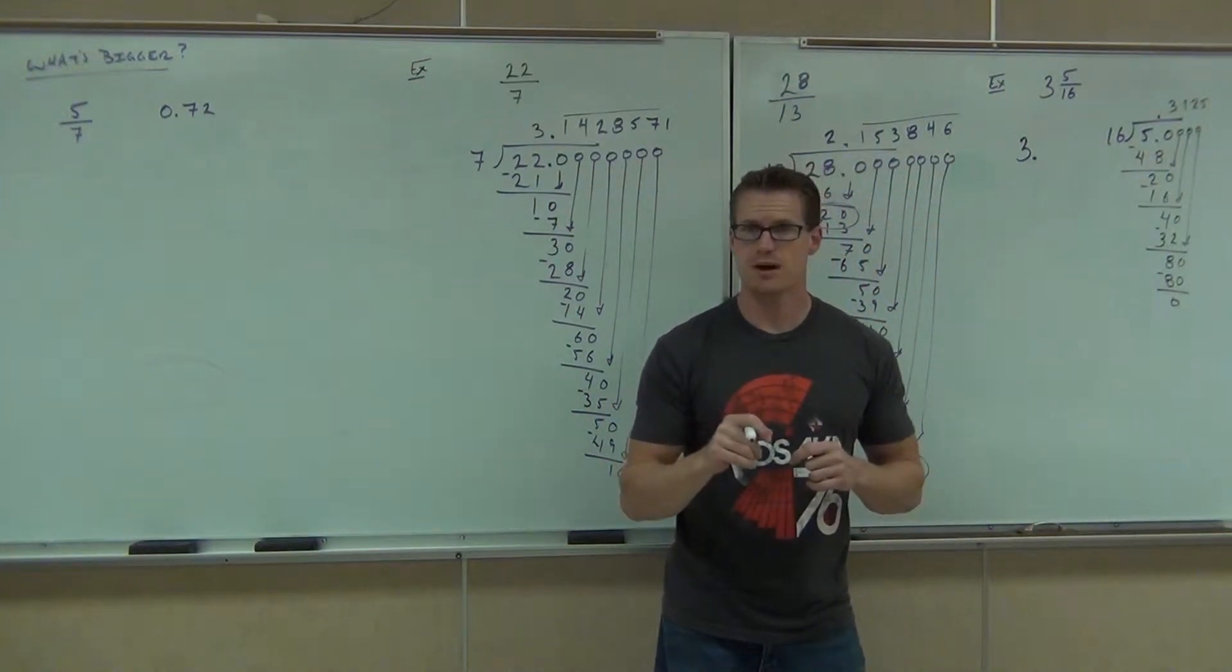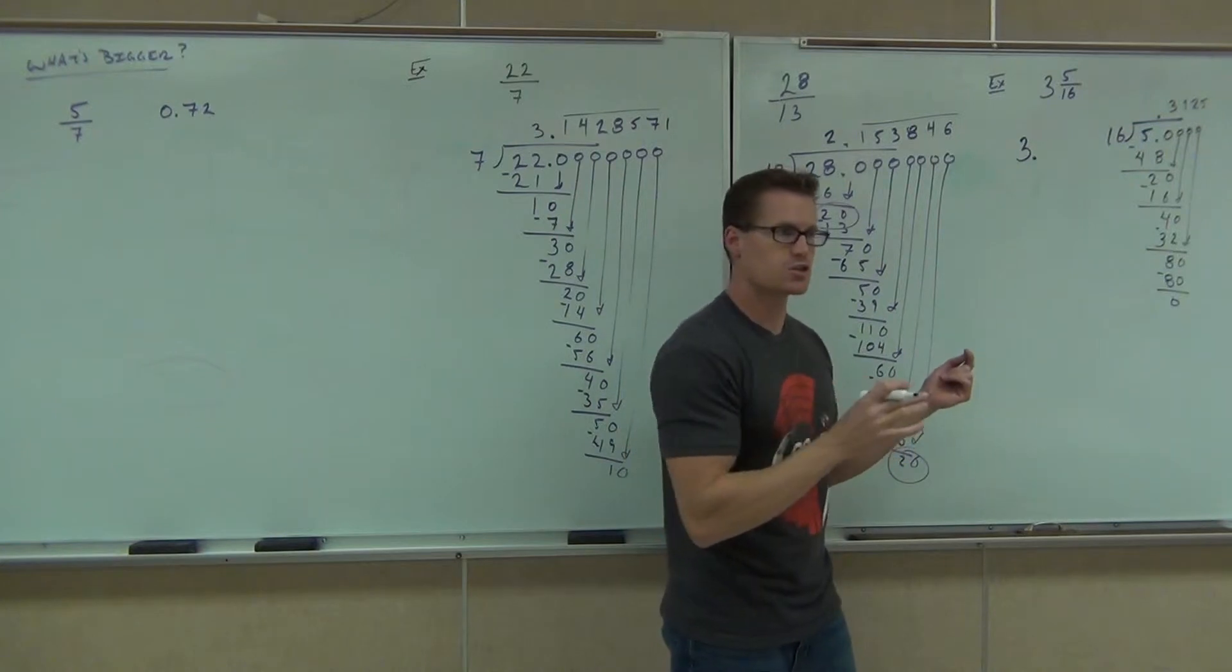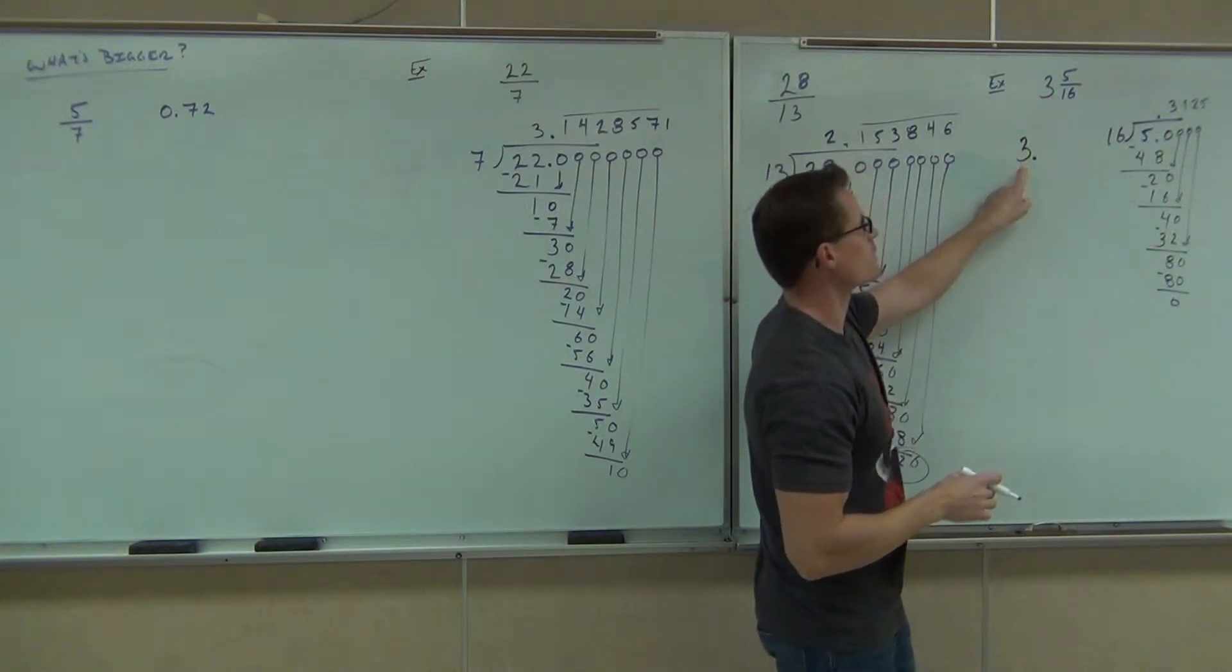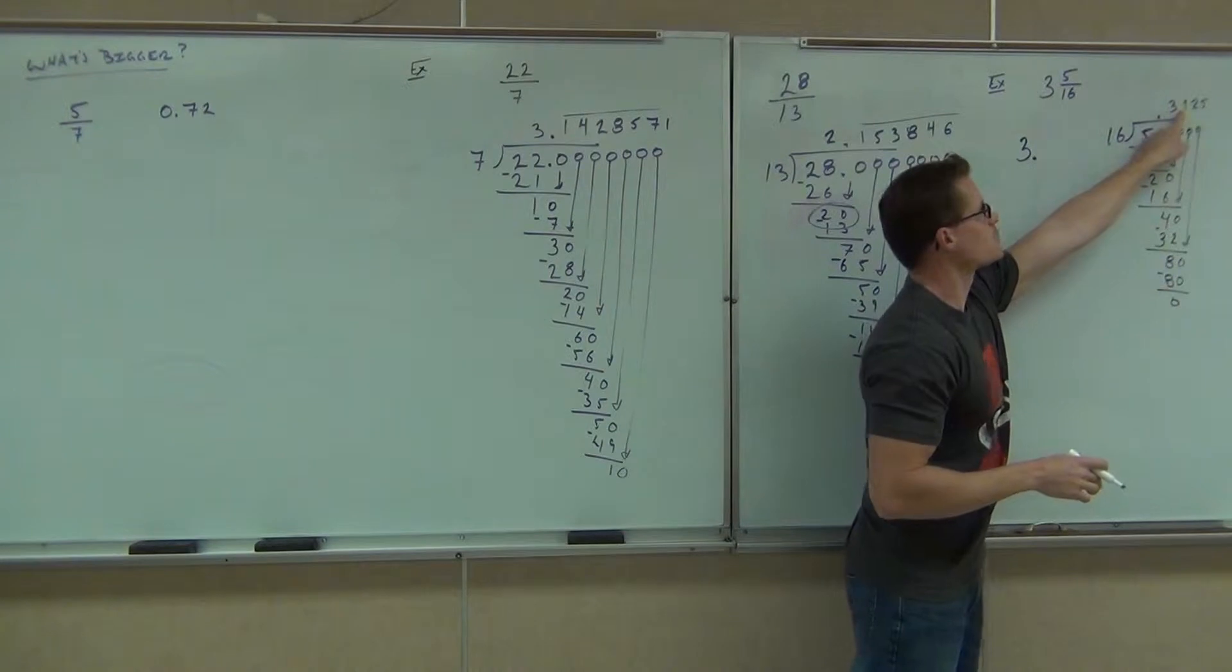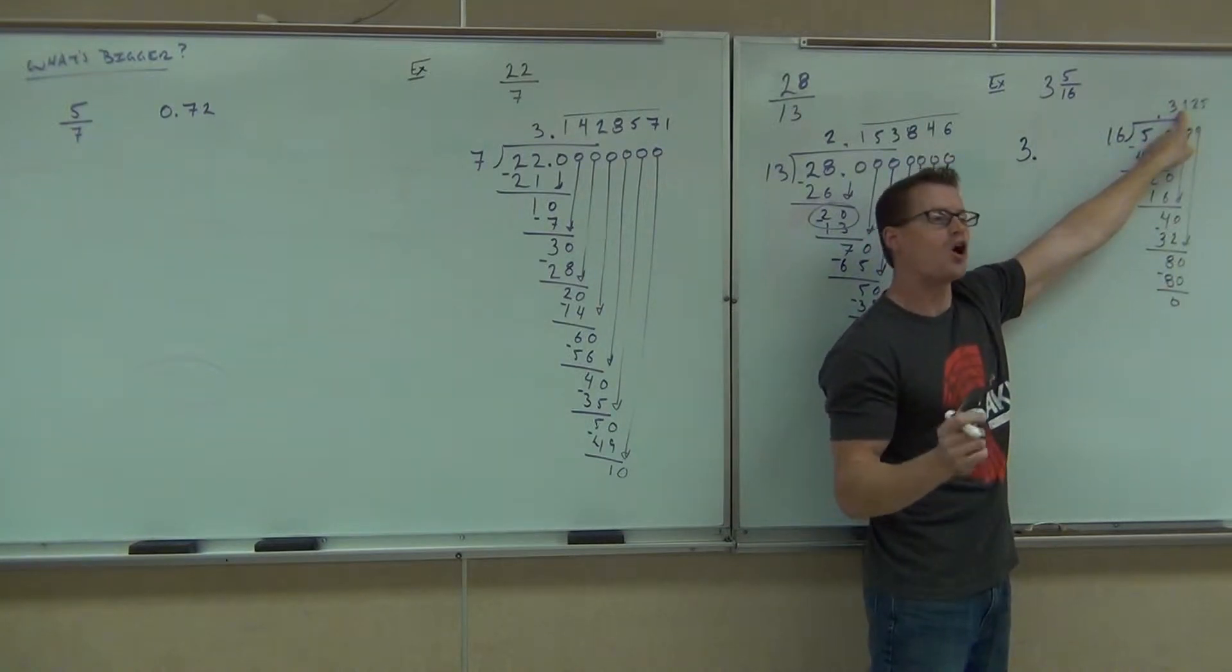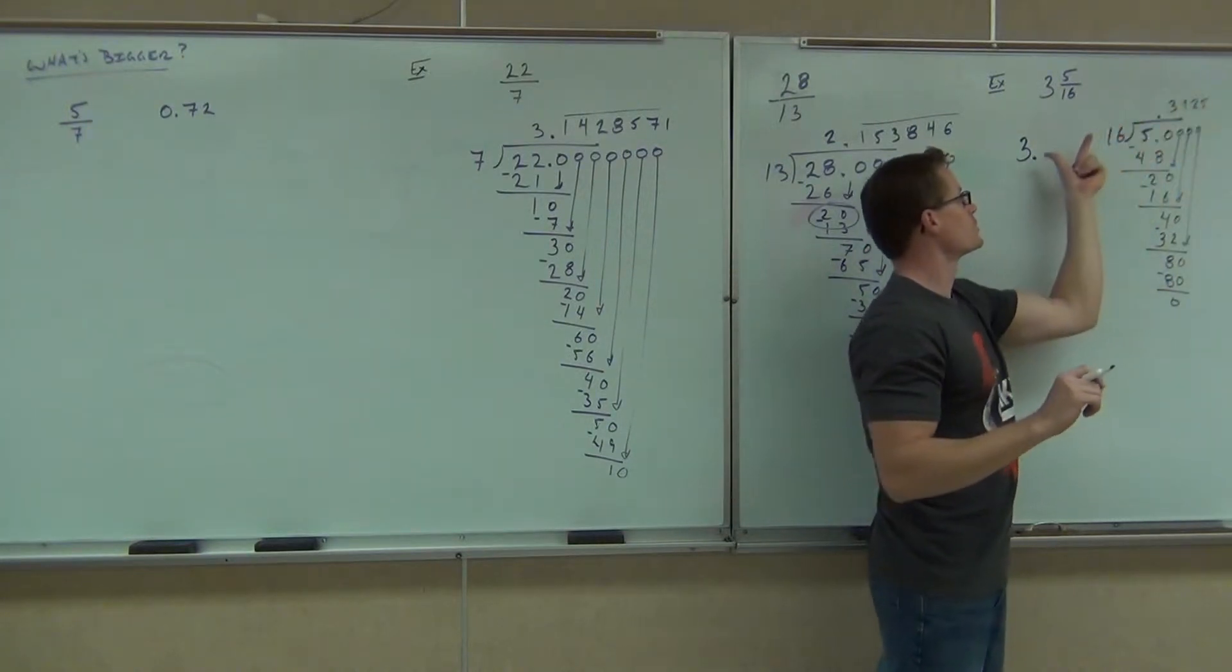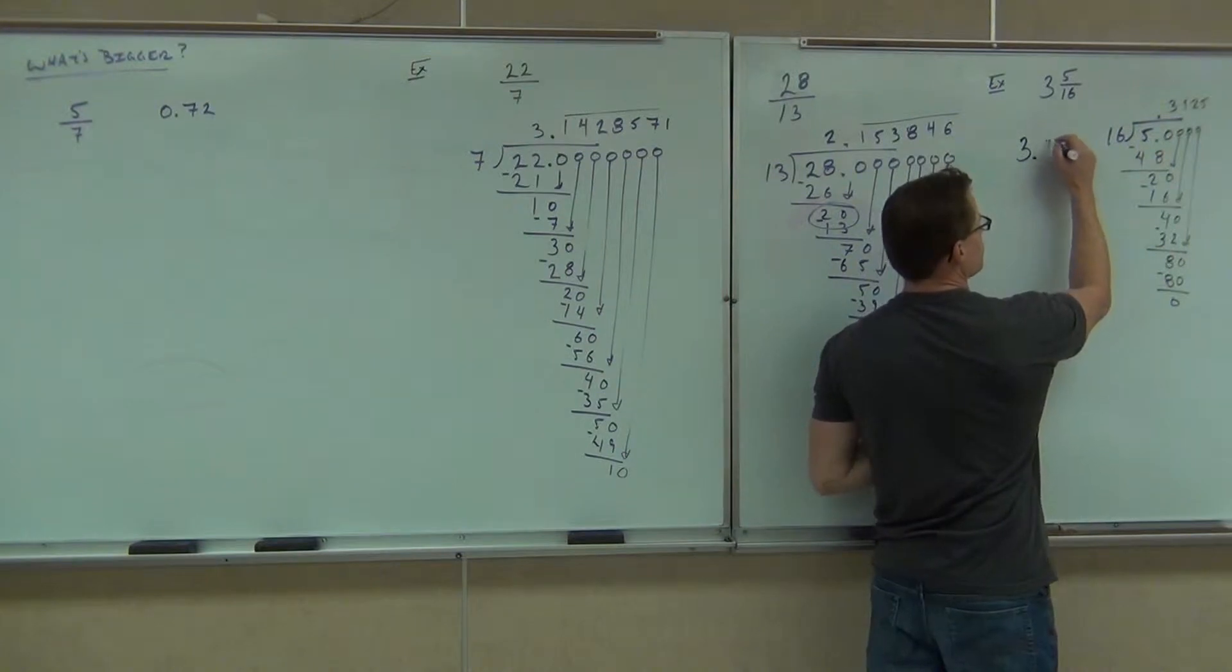Did you get 0.3125? Yes. So here's the issue. You had this whole number here. That's going to be a whole number here. This was your fraction part. That's your decimal equivalent to your fraction part. All you have to do is tack this part onto this number. 3.3125 is your answer.